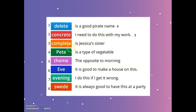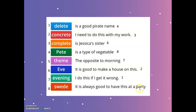I need a name that is Jessica's sister — we've used Pete already so Eve is Jessica's sister. What is a type of vegetable? Exactly: swede — it looks like a turnip. I need a word that is the opposite of morning: evening. It is good to make a house on this — we use it with buildings: concrete. I do this if I get it wrong: delete. Last sentence: it is always good to have this at a party — a theme.